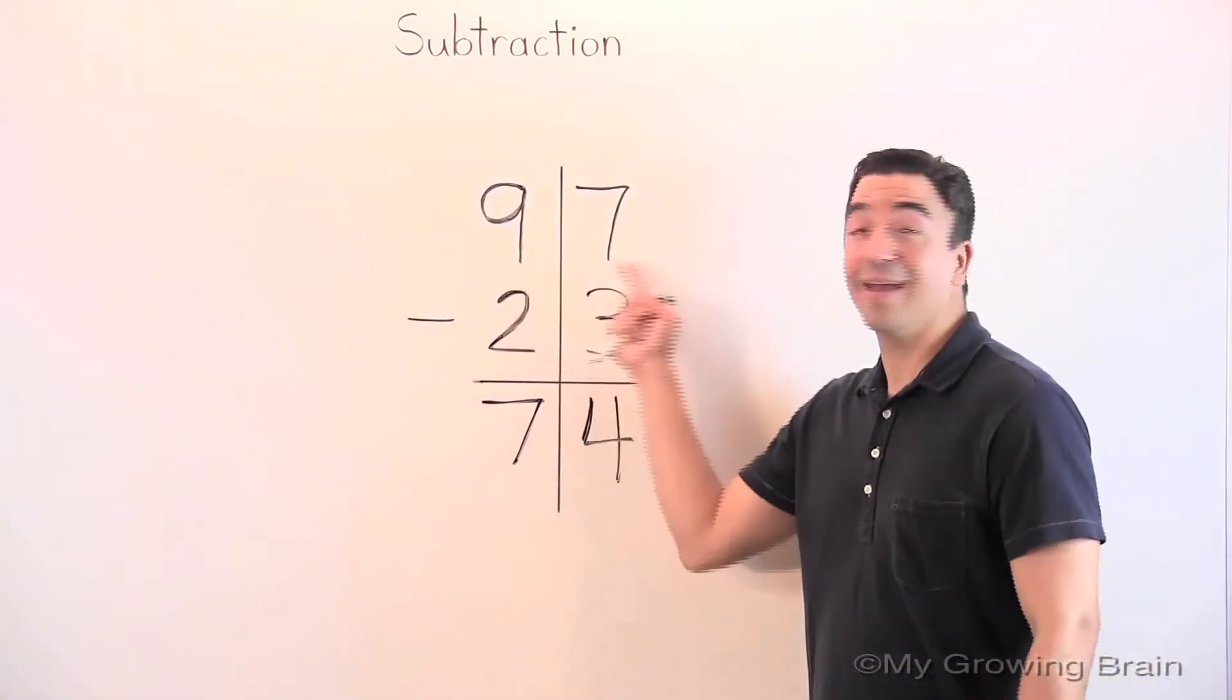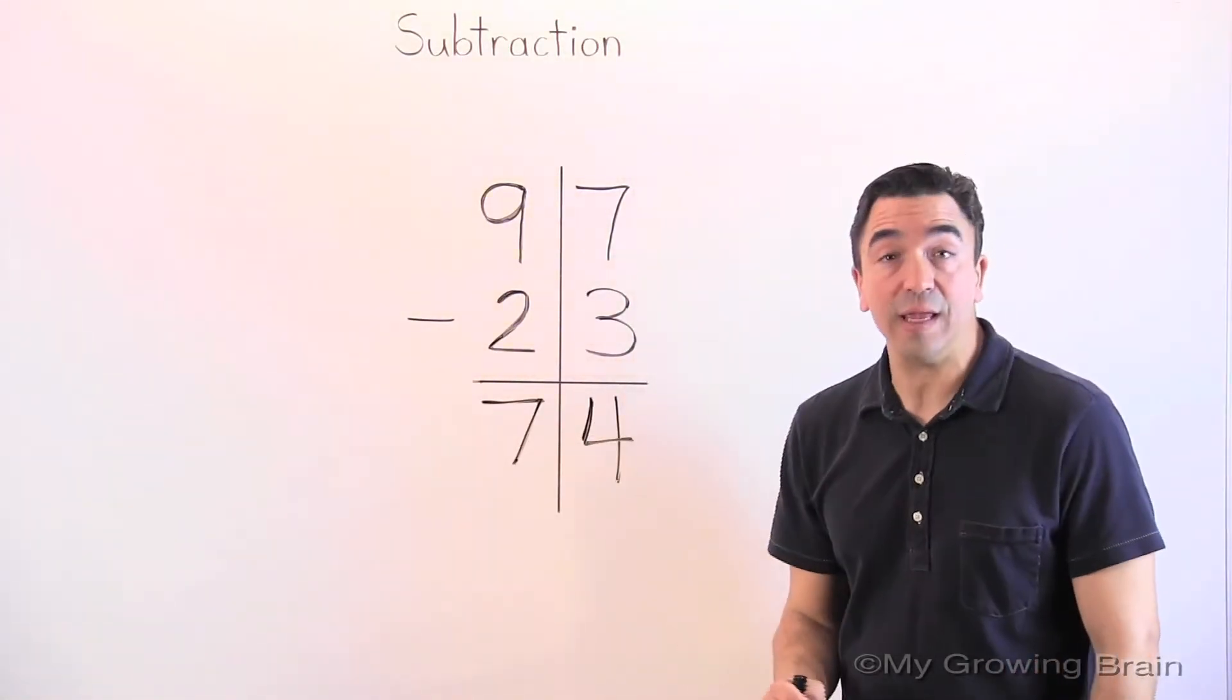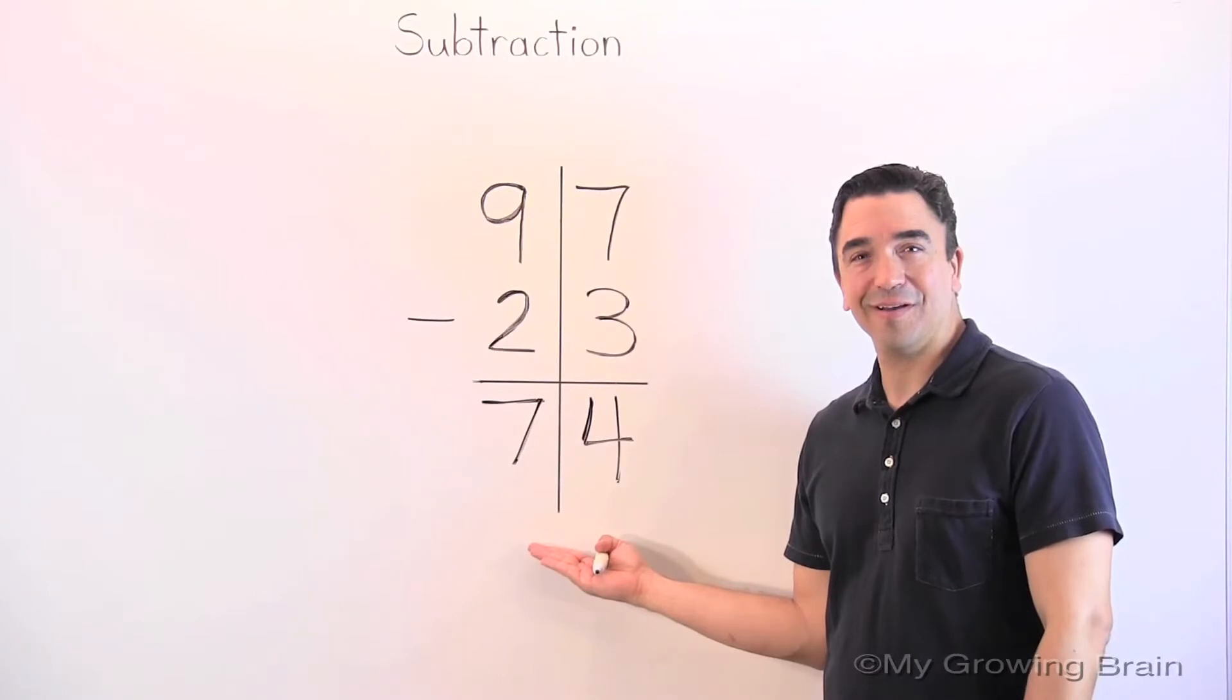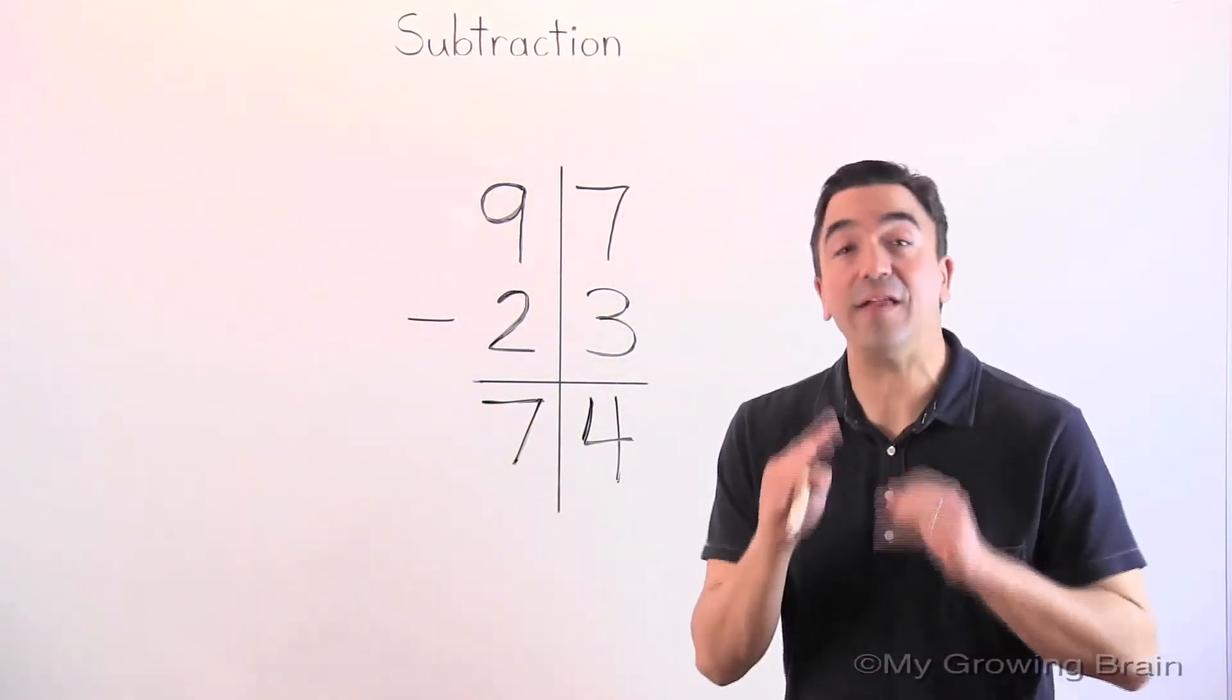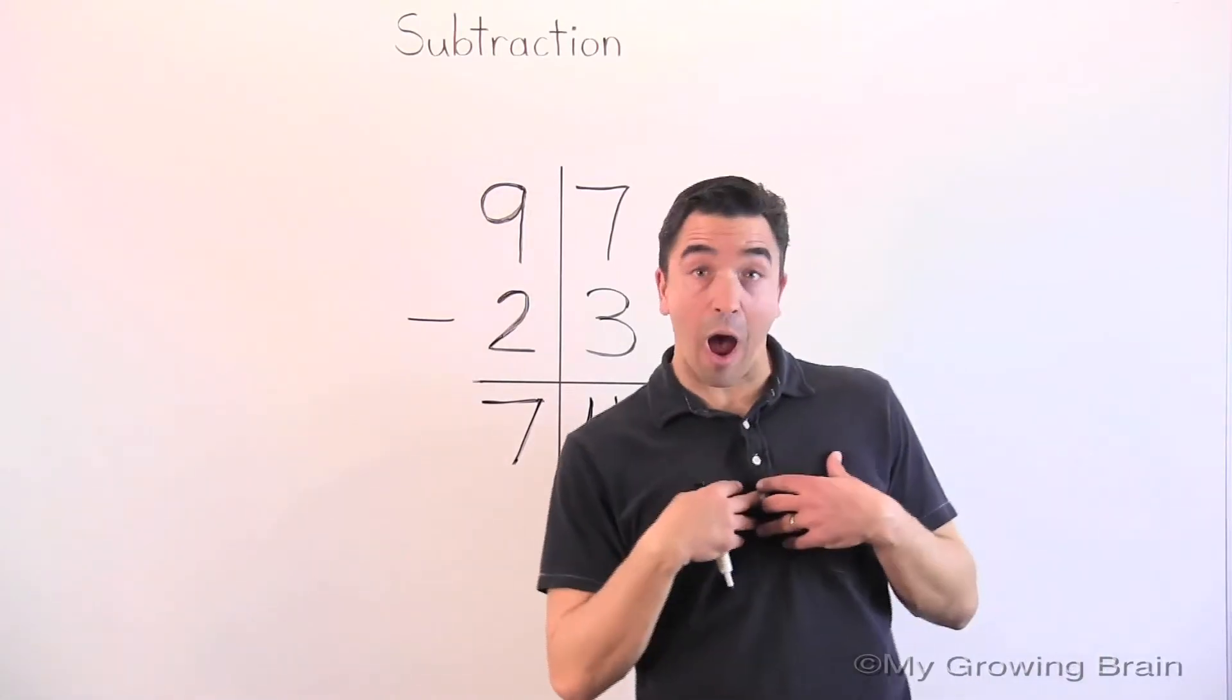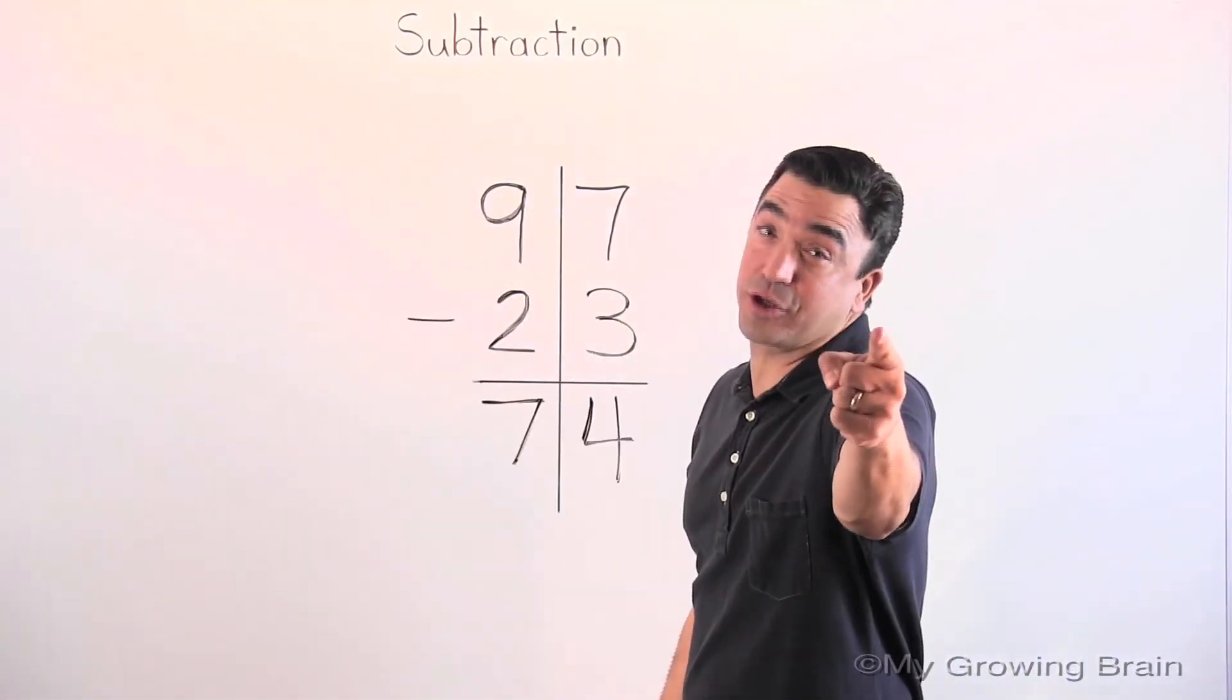Therefore, 97 minus 23 gives us a difference of 74. Don't forget, the difference is the answer to a subtraction problem. That concludes our lesson on subtraction. Coach Mike at My Growing Brain Challenge Yourself!